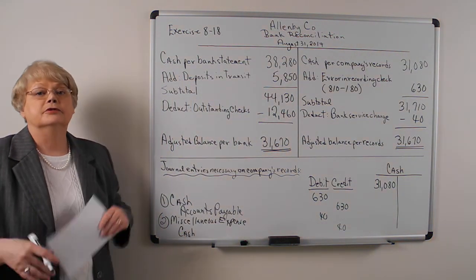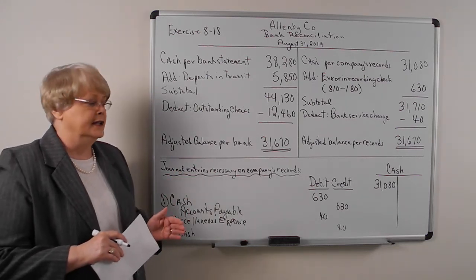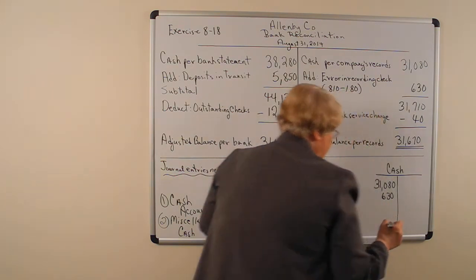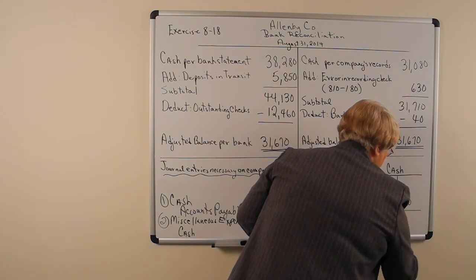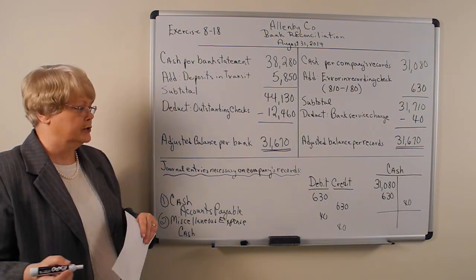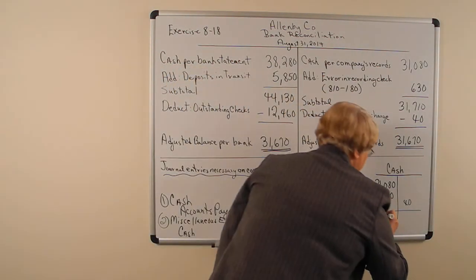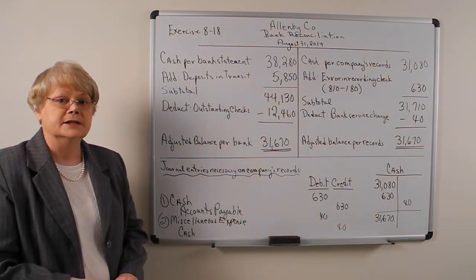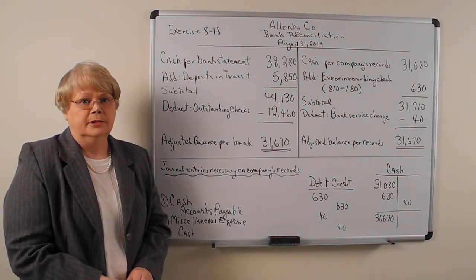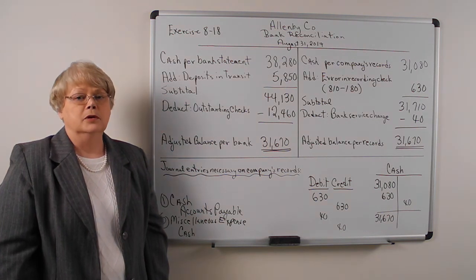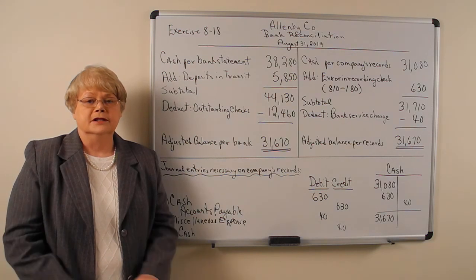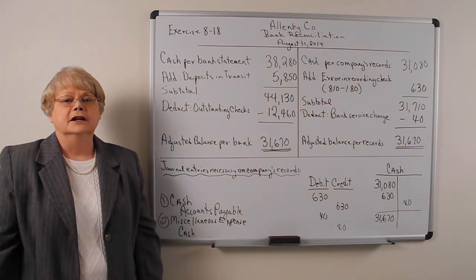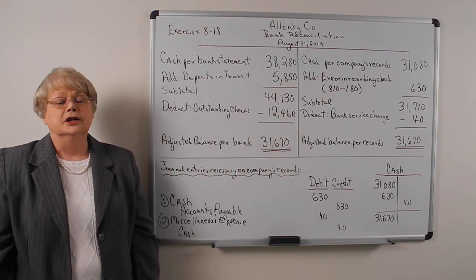It's not enough just to make the journal entry — you've got to post it. Going to our T-account representing the general ledger, we debit the cash account for $630 and credit the cash account for $40. The adjusted balance in the general ledger should then be $31,670, which is also the cash balance you will report on the balance sheet. I'll continue talking about this chapter in the next video, covering petty cash and special fund accounts. If you have any questions, just let me know. Thank you.